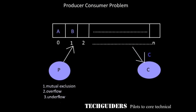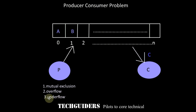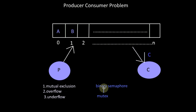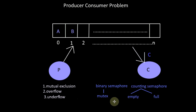To handle these synchronization issues using semaphores: to handle mutual exclusion, we make use of a binary semaphore named mutex. To handle the other two issues — overflow and underflow — we make use of two counting semaphores, one named empty and the other named full.